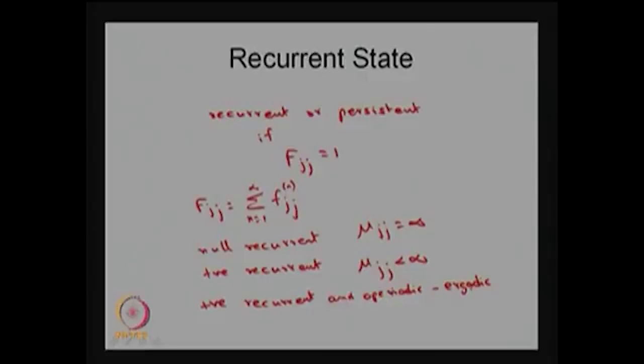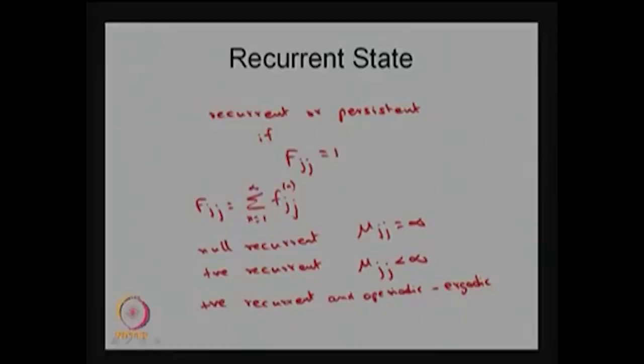In a Markov chain, if all the states are ergodic — that is, all states are positive recurrent as well as aperiodic — then we call that Markov chain itself an ergodic Markov chain. This corresponds to an irreducible Markov chain where all states form one closed communicating class. If each state is positive recurrent and aperiodic, then all states are of the same type and same period, making all states ergodic and the chain an ergodic Markov chain.